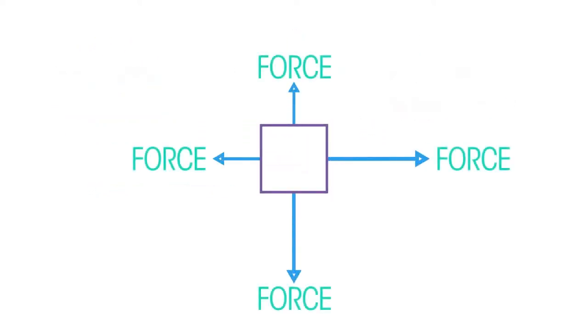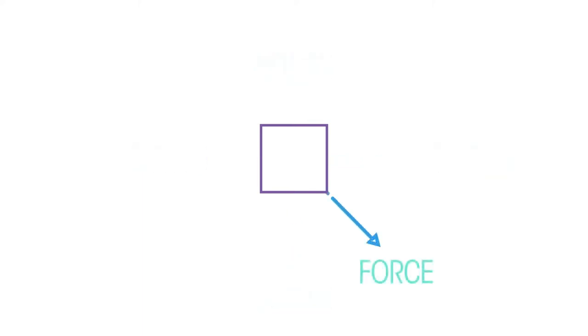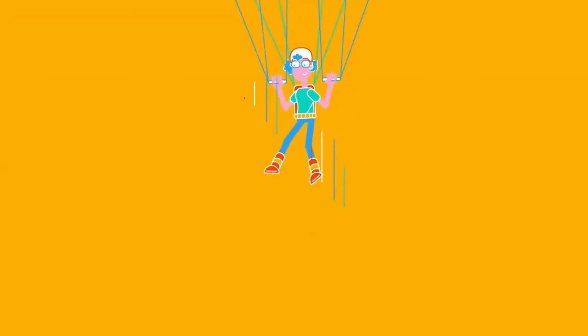When several forces act on an object, they can be replaced by a single force that has the same effect. This single force is called the resultant force.